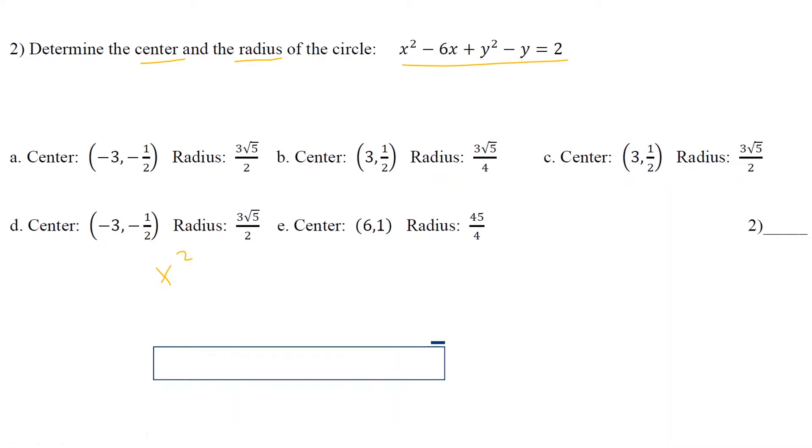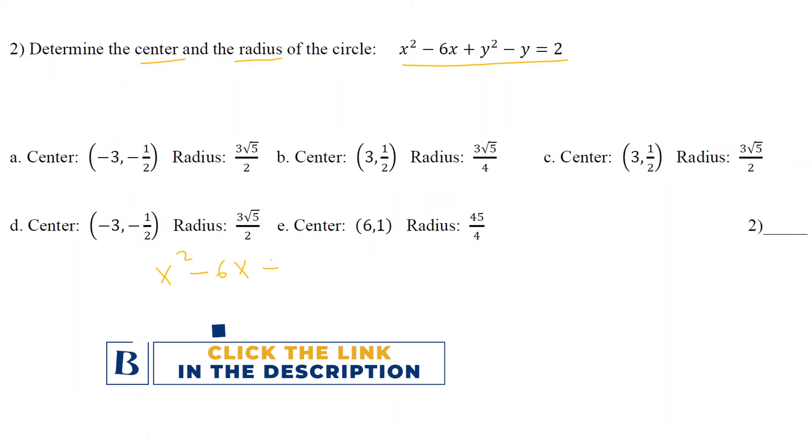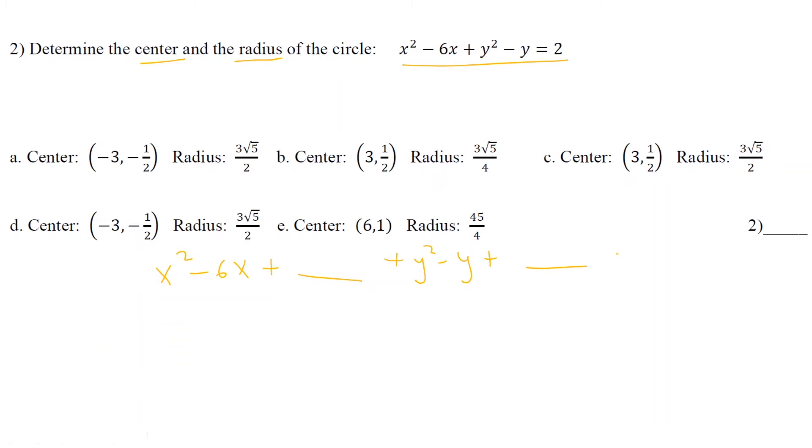First of all, let's leave a blank space x squared minus 6x plus blank plus y squared minus y plus blank equals 2. So here in the blank, I will put negative 6 over 2 squared. I'm just putting this number. And here I'm putting the number by the negative y. What is that number? It's not negative y. It's negative 1 times y. So it's negative 1 over 2 squared. But I cannot add those two numbers just to the left side. I also have to add these numbers to the right side. So it's negative 6 over 2 squared plus negative 1 over 2 squared.